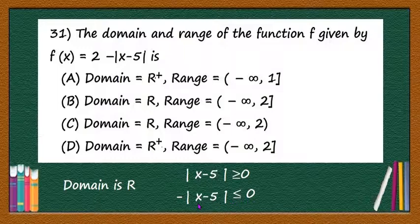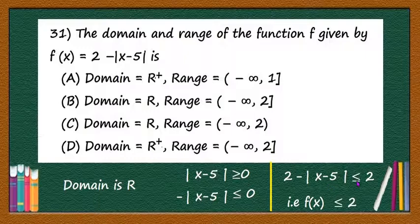If you add 2 to both sides of this inequality, you will have 2 - |x - 5| is less than or equal to 2, that is f(x) ≤ 2.